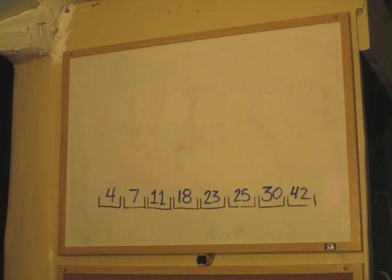4, 7, 11, 18, 23, 25, 30, and 42. It's sorted, and that was pretty fast.